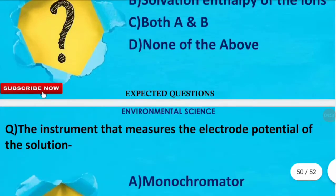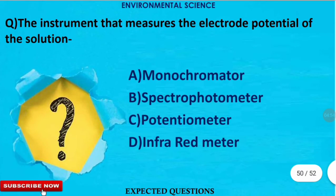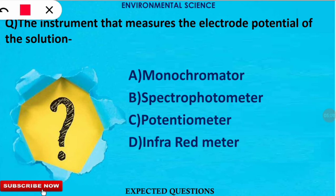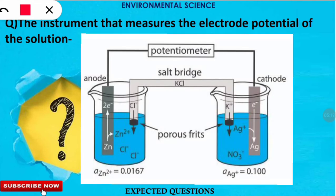The next question is: the instrument used for measuring the electrode potential of a solution is known as what? The correct option is C — a potentiometer is used to measure the electric potential of any solution.